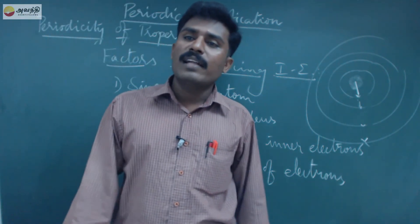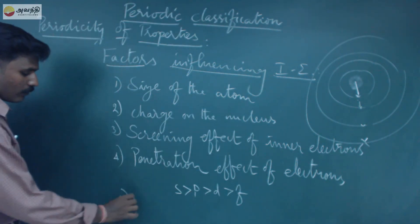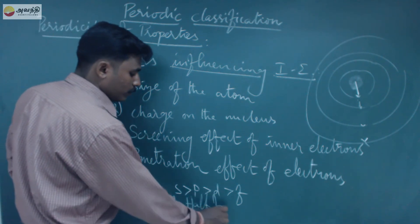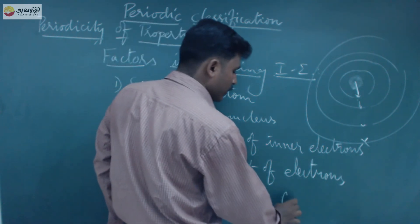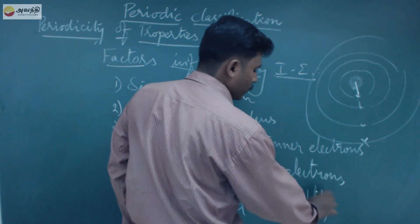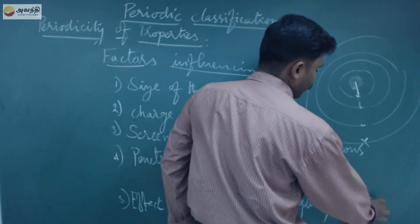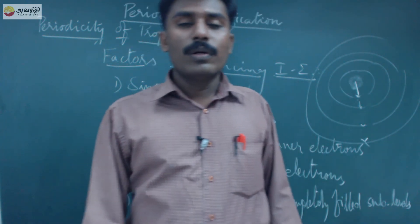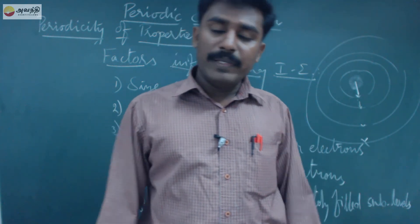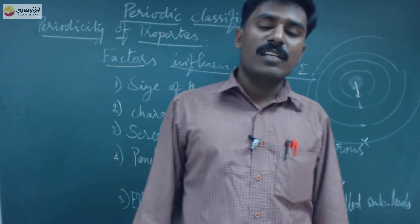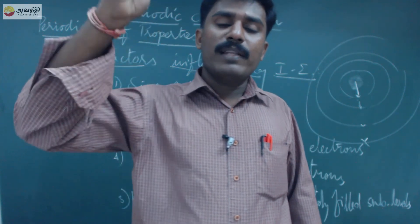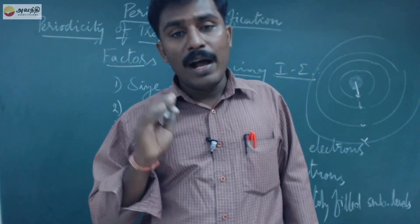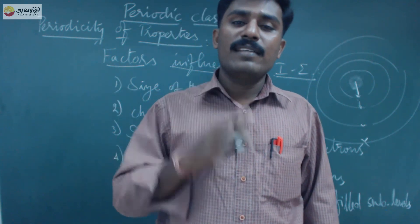The last point is the effect of half-filled and completely filled sublevels. In electronic configuration, np6 is completely filled and np3 is half-filled. Half-filled and completely filled electronic configurations are highly stable. Because the energy is higher, the ionization energy also increases — it is harder to remove the electron. So high ionization energy is required to remove electrons from these configurations.